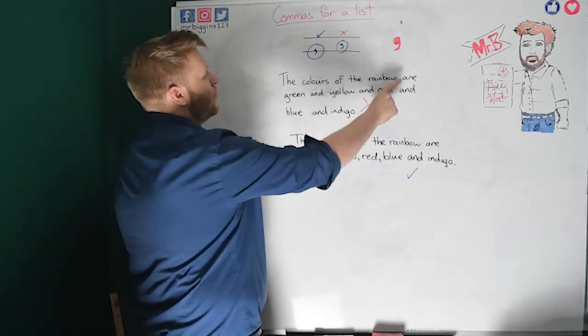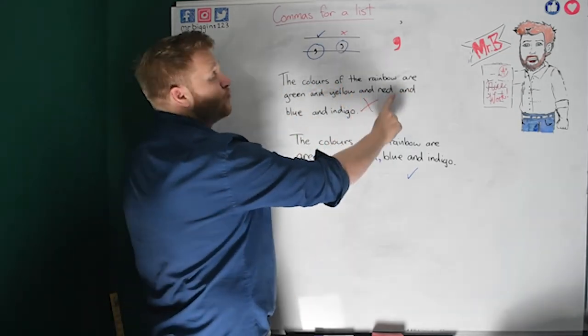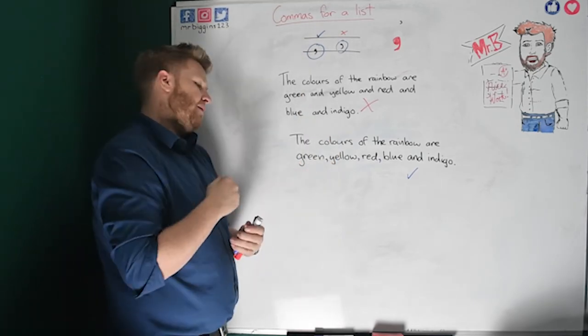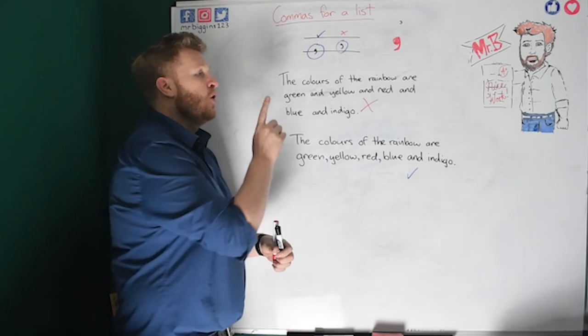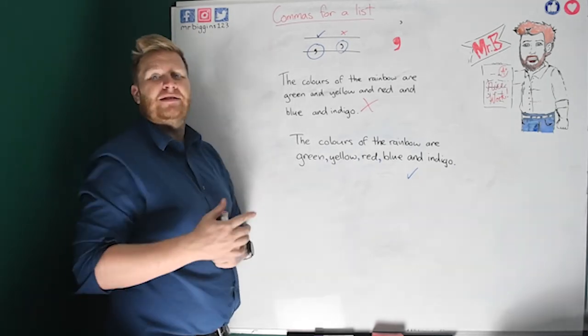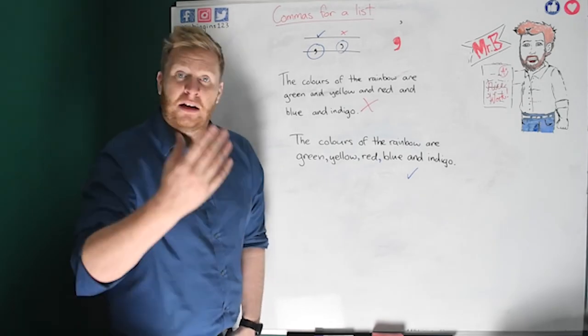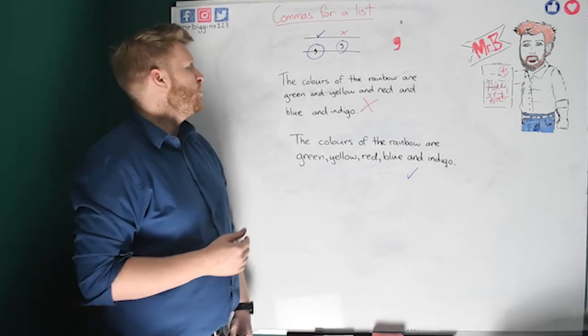The colours of the rainbow are green and yellow and red and blue and indigo. Okay. Now, your teacher or whoever is teaching you to write will be telling you we shouldn't be using all of those ands in a sentence, okay. And we wouldn't say it in a sentence. If someone came to you and said, hello, what's the colours of the rainbow?